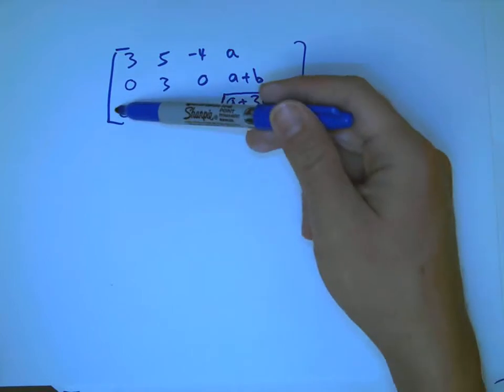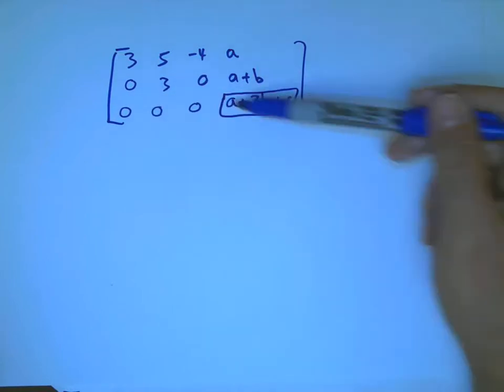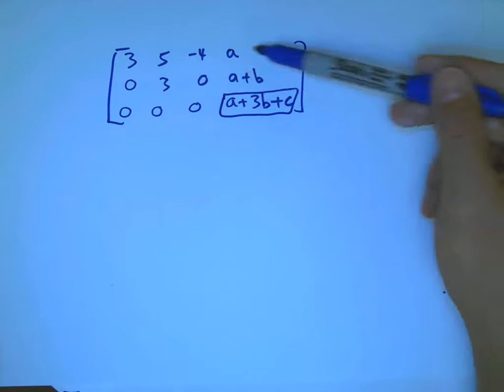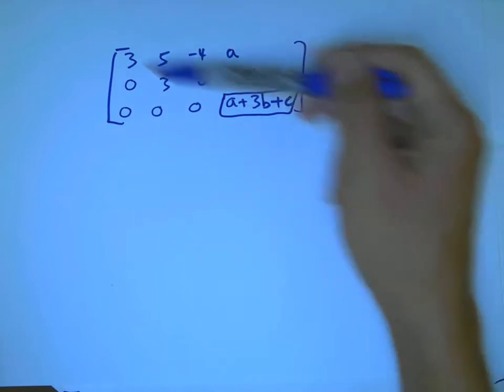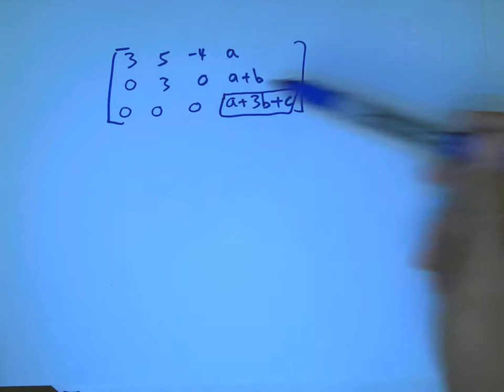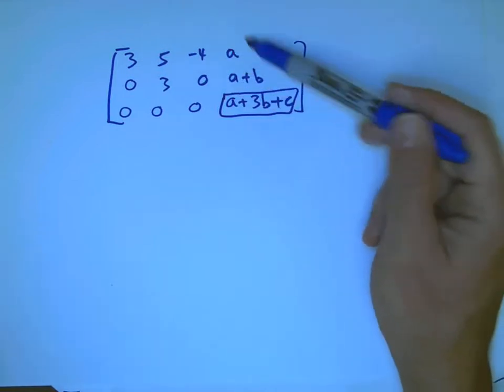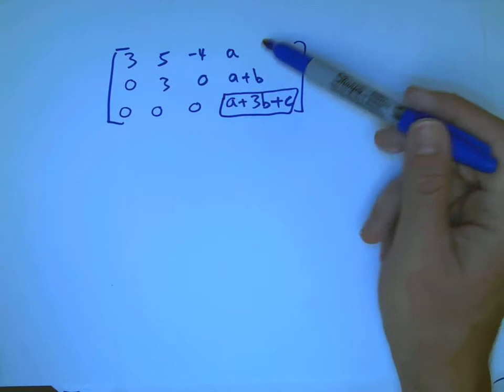And this is the key. If that is 0, then it's going to work. Because I'm going to have 0 equals 0 here. That doesn't bother me. And then I'm really going to have just two rows and three columns. I have a free variable. I have two leading variables or pivot variables. It's going to be great. I'm going to get an explicit solution.